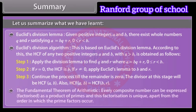The fundamental theorem of arithmetic: Every composite number can be expressed, or factorized, as a product of primes, and this factorization is unique, apart from the order in which the prime factors occur.